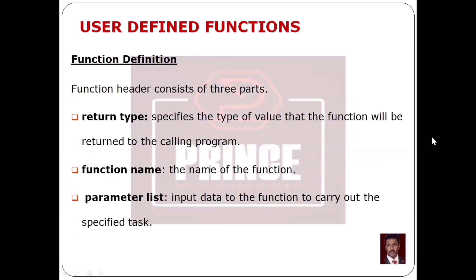The return type specifies the type of the value that the function will return to the calling program. If we have the main function, we can call a function. The function performs a specific task, calculates a result, and returns it. The data type of the returned value is the return type.